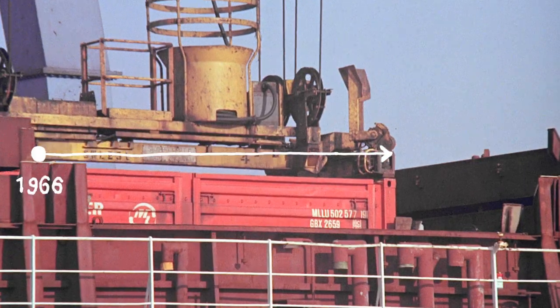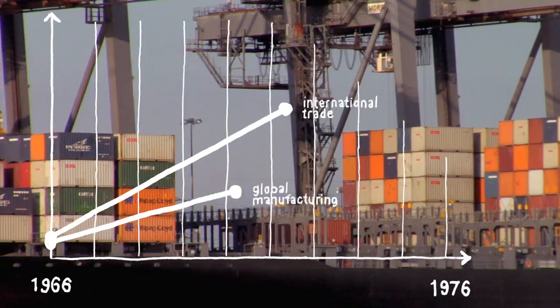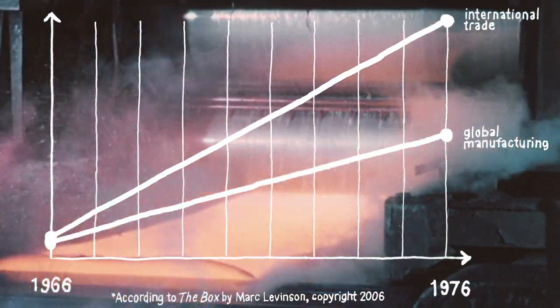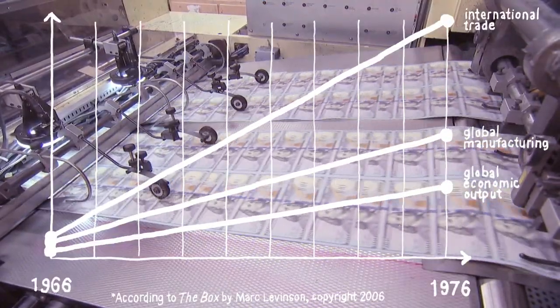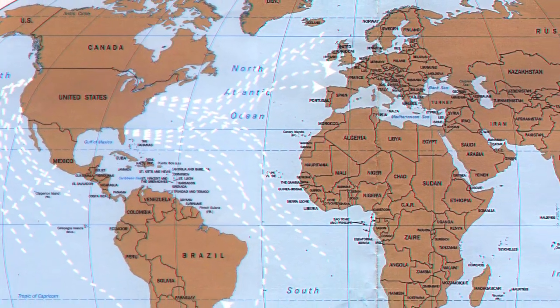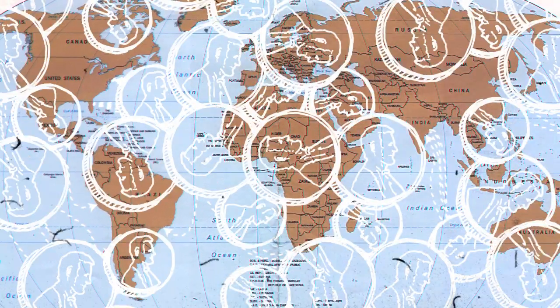If you look at the 1960s — say the decade starting around 1966 when the container really started to be used — the amount of global trade was two times the amount of global manufacturing, and two and a half times global output. Suddenly, when we agreed on just a common box we could move around, the world began to flatten out. We really started to see worldwide commerce take off, and it had a big economic impact on the world.